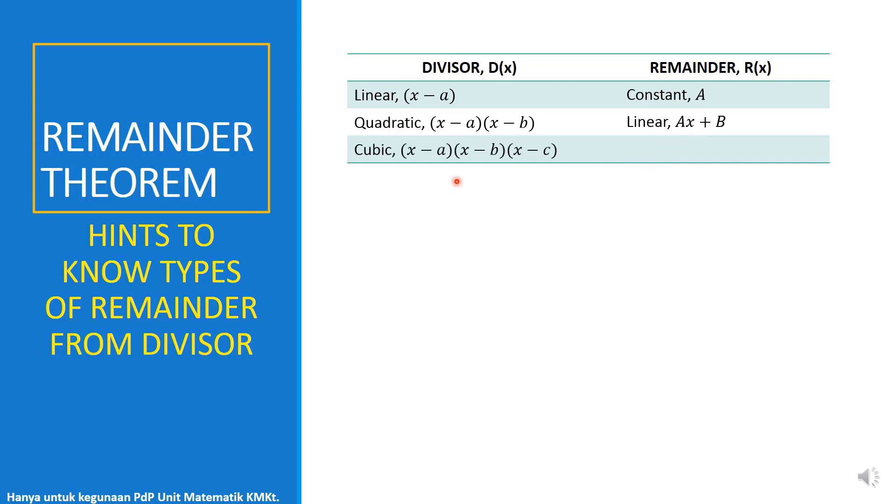Same as if we have a cubic divisor, then we get quadratic remainder. If we look at divisor and remainder, the difference of power of x. If we have a divisor x power of 1, then the constant is x power of 0. If we have a quadratic that is x power of 2, then the remainder is x power of 1.